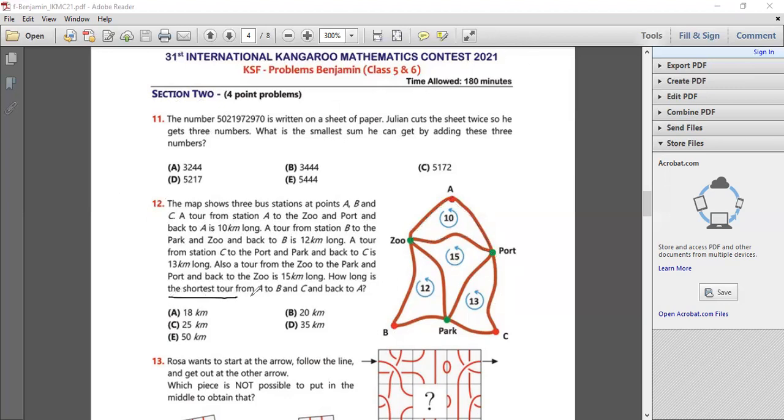How long is the shortest tour from A, B, C and back to A? So you have to go from A to B to C and then back to A. I have to find the shortest route possible.